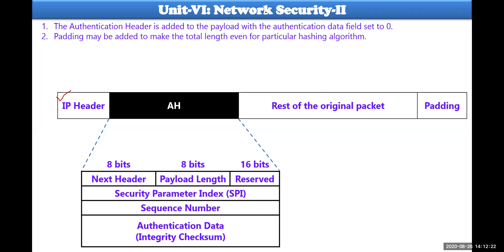Padding may be added up to the total length required by the hashing algorithm. SHA-512 can be applied on this total packet to identify the hash value - otherwise called the checksum value or message digest value - all these words are synonyms in cryptography. Therefore, to identify the message digest, padding could be added based on requirement. If there is no requirement, padding would not be there. If required, based on the length of the packet being short of 512 bits, that many continuous zeros are going to be padded at the end.